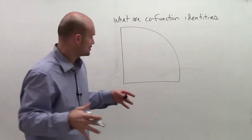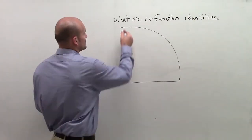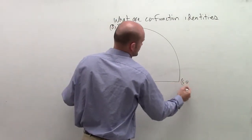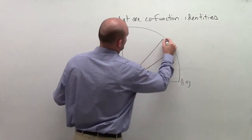Following up co-function identities, the main important thing that I want to do is fill in our points. So we know that this point is 0 comma 1, we have 1 comma 0, and then we have three important parts, or three really important angles.